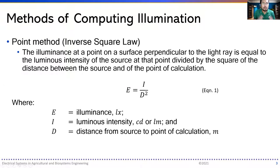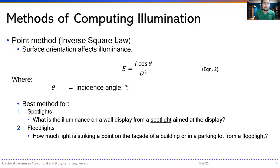The point method considers the illuminance at a point on the surface perpendicular to the light ray, equal to the luminous intensity of the source divided by the square of the distance between the source and the point of calculation. The luminance in lux equals the luminous intensity in candela divided by the distance squared. If there is an angle of incidence, the cosine of that angle is multiplied into the original equation.